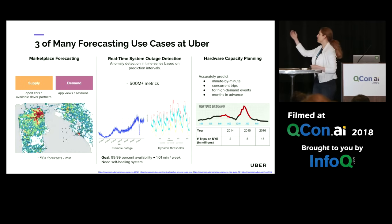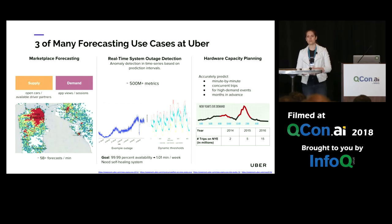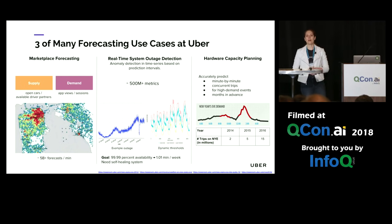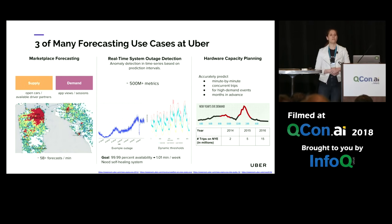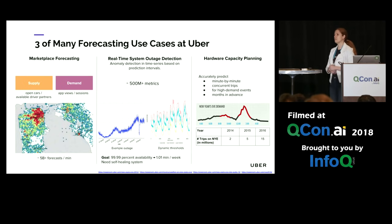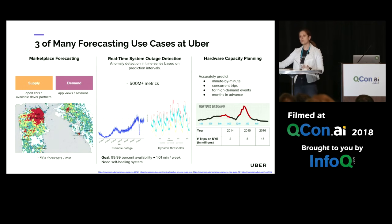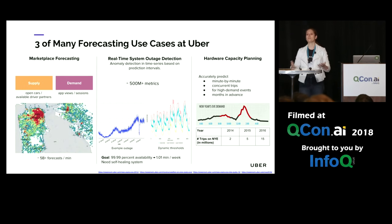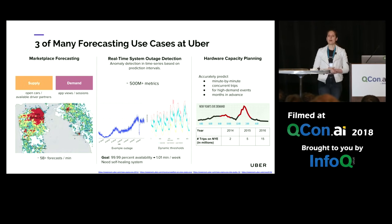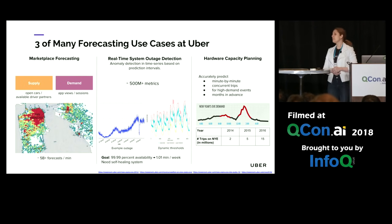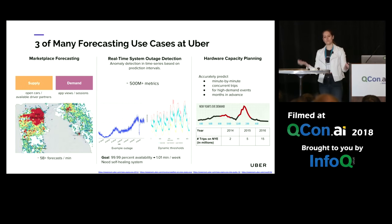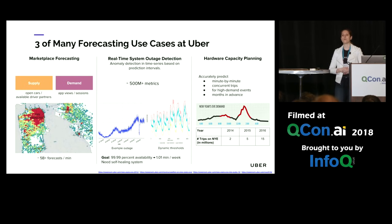This is a very large-scale problem. We have over 500 million metrics that we're tracking at Uber. The third use case is our hardware capacity forecasts. These are particularly important because Uber is such a large business nowadays. We cannot just double or triple our hardware for special events such as Halloween or New Year's Eve — that would be fiscally totally irresponsible. At the same time, we also cannot under-provision, because this would potentially lead to outages and eroded trust of our rider and driver partners.